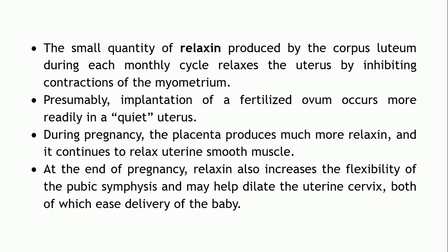A third hormone released by the corpus luteum is relaxin. As the name implies, its main function is to relax the uterus — it inhibits the contractions of the myometrium, which is the middle layer of the uterine wall comprising smooth muscles. This inhibition of smooth muscle contractions is advantageous because the process of implantation — by which the fertilized ovum attaches itself to the wall of the uterus — occurs more readily in a quiet uterus where there are not many contractions.